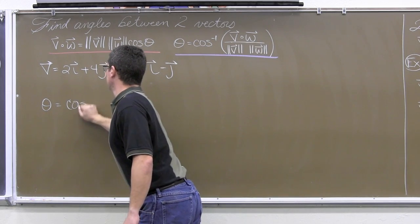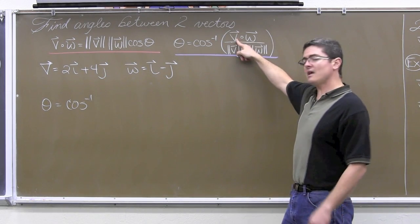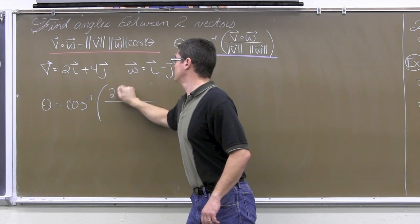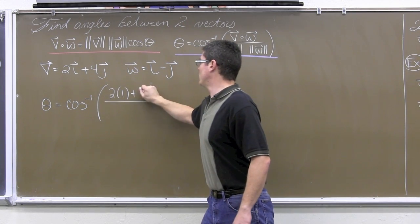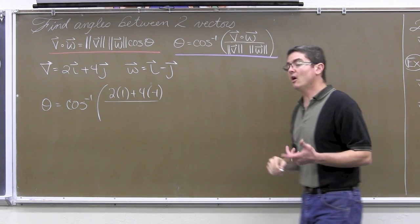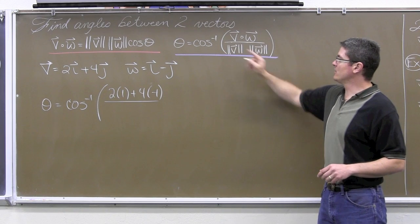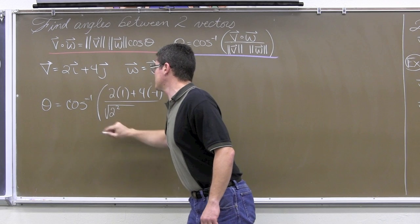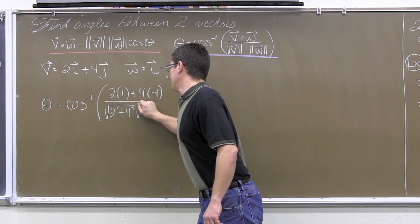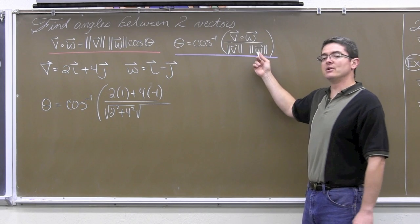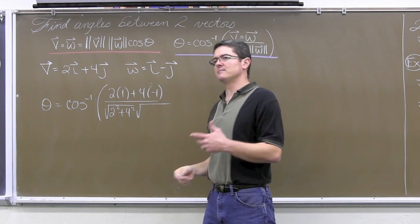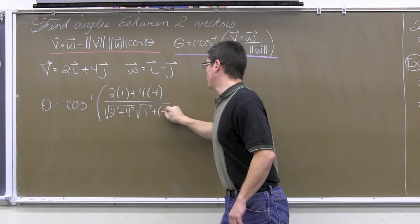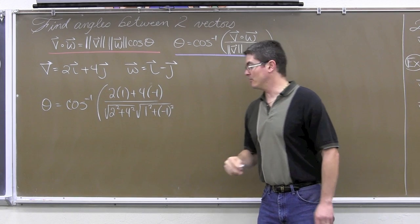So, here we have a couple of vectors and let's run through this formula. Theta is equal to the inverse cosine of the dot product between the two vectors. So, we have 2 times 1 plus 4 times negative 1. That is going to be over the magnitude of v, which is going to be the square root of a squared plus b squared times the magnitude of vector w.